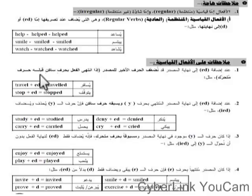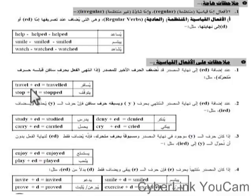لما يكون الفعل بينتهي بـ vowel وبعده حرف ساكن، بنعمل double للحرف الأخير ونحط الـ ed فبتبقى travelled. الـ e ده حرف متحرك vowel، الـ l حرف ساكن، عملنا double للحرف الأخير وحطينا ed. زي stop برضو — الـ o ده vowel والـ p حرف ساكن، عملنا double للحرف الأخير اللي هو الـ p وحطينا ed فبتبقى stopped.